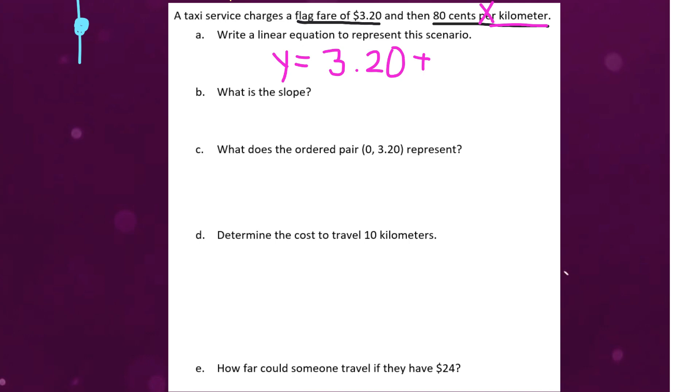The tricky part here is that the flag fare is in dollar amounts. So, we need to actually convert $0.80 into dollars, just so we're dealing with the same unit of measurement. So, $0.80 is $0.80. And we're going to multiply that by x. x representing the number of kilometers that we're driving.